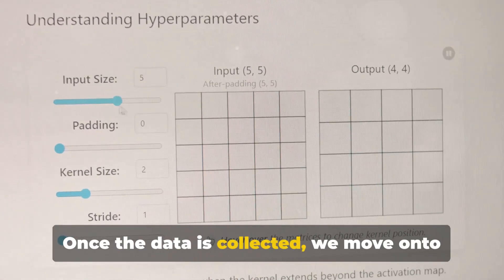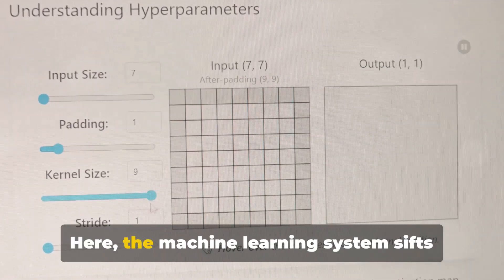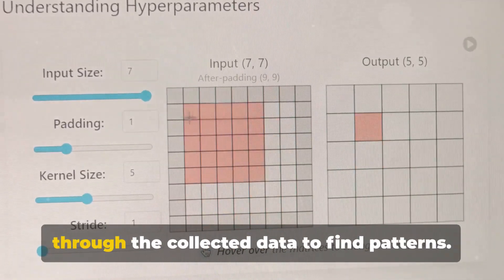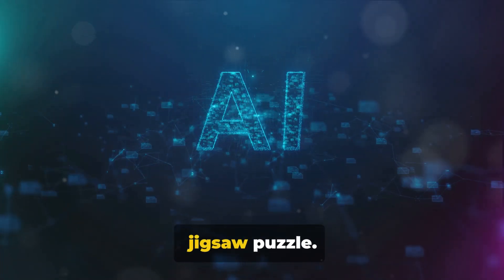Once the data is collected, we move on to the second step: data analysis. Here, the machine learning system sifts through the collected data to find patterns. It's like piecing together a complex jigsaw puzzle.